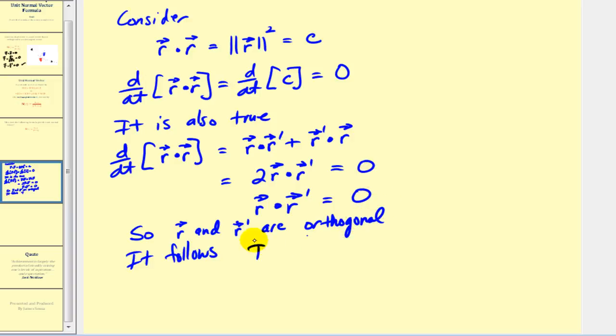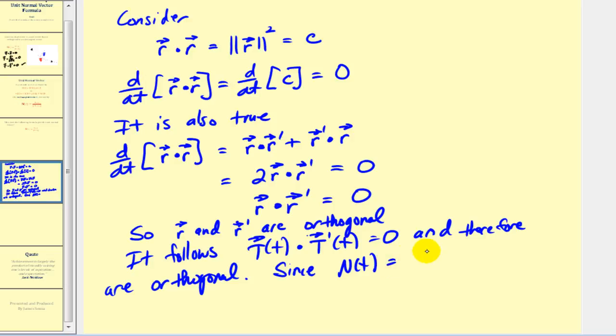So it follows that t dotted with t prime of t would also equal zero, and therefore are orthogonal. And since n of t is defined by t prime of t divided by the magnitude, it must be true that t of t dotted with n of t would also be zero, and therefore these two vector valued functions will always be orthogonal to one another, and therefore our formula holds.